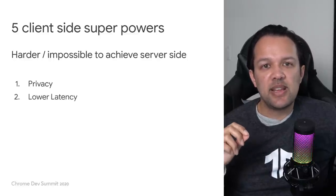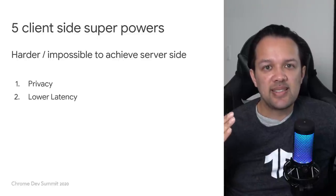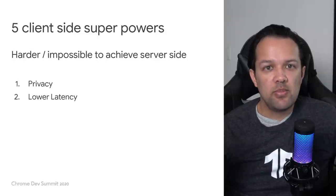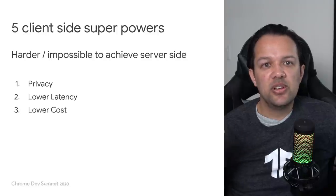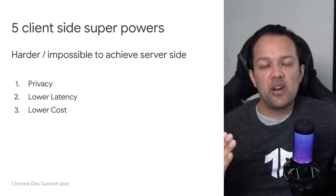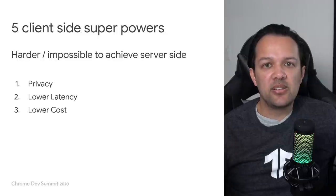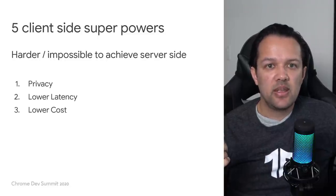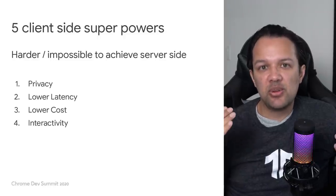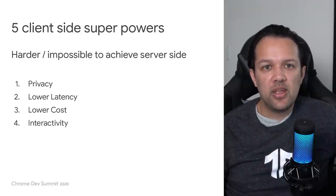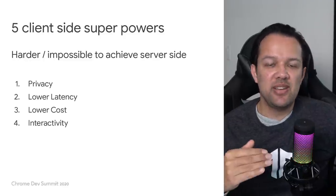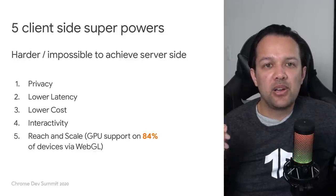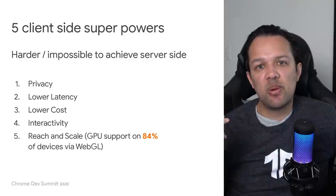Next up is lower latency. JavaScript has direct access to sensors on device such as the microphone, camera, and accelerometer, so there's no round-trip time to the server. Latency to the server could be close to 100 milliseconds on a mobile connection, but with TensorFlow.js running on device, we can go much faster. Next, cost: if no data is sent to a server, less bandwidth and hardware costs are required — no CPU, GPU, or RAM needs to be hired running 24/7 for inference. You just pay for hosting of website assets and model files. Next up, interactivity: web tech has been great at this since the very start and has evolved to handle richer formats like WebXR and WebGL. And finally, reach and scale: zero installation is required. Anyone can click on a web hyperlink and load a web page, and the machine learning will just work.